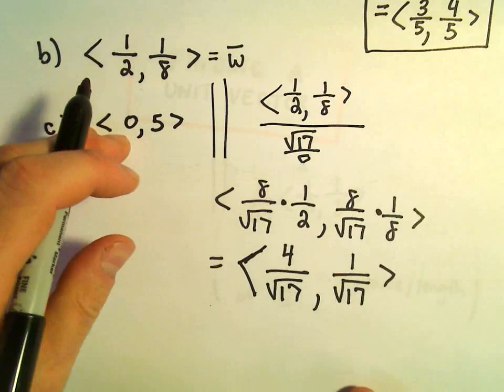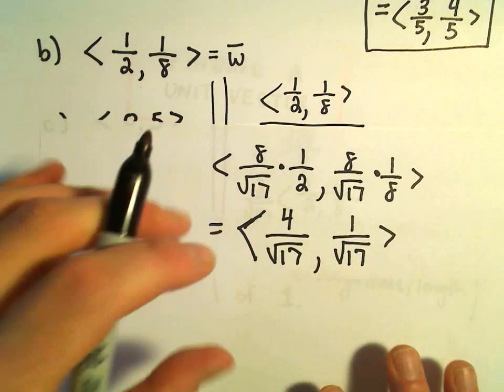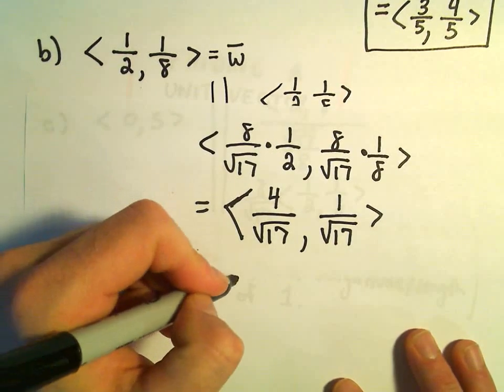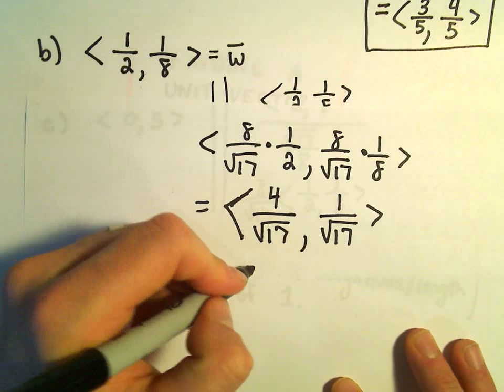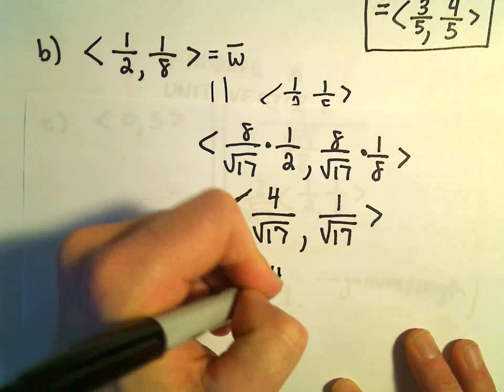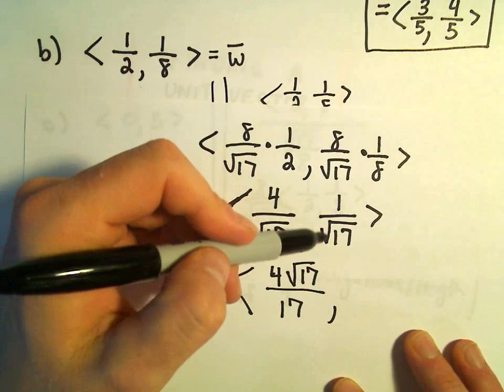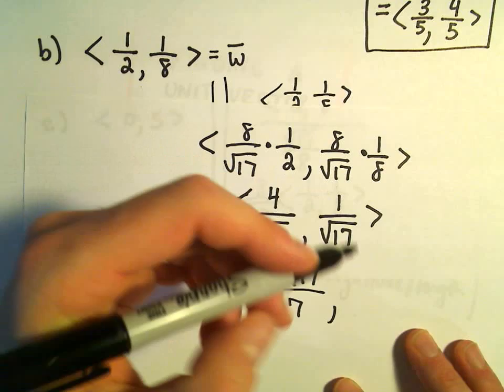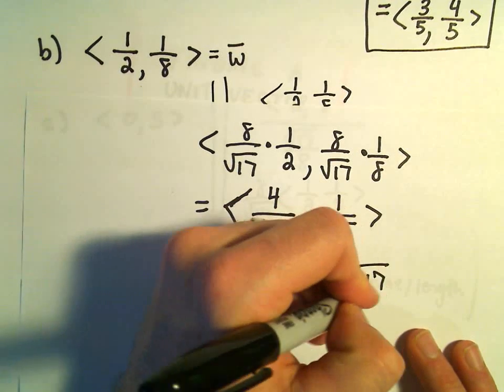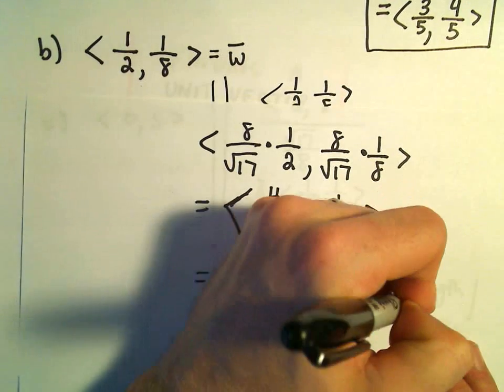You can always rationalize the denominators. You can multiply top and bottom by the square root of 17. I don't know how important that is. Let's go ahead and do it. We get 4 root 17 on top over 17. If we multiply top and bottom by the square root of 17, we'll be left with the square root of 17 over 17.